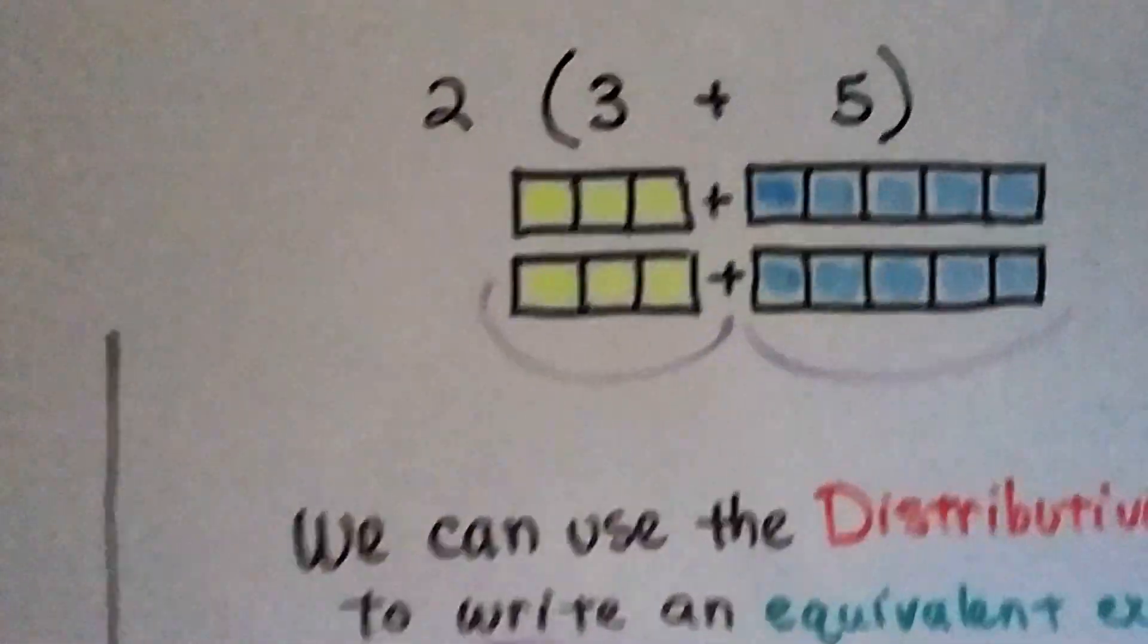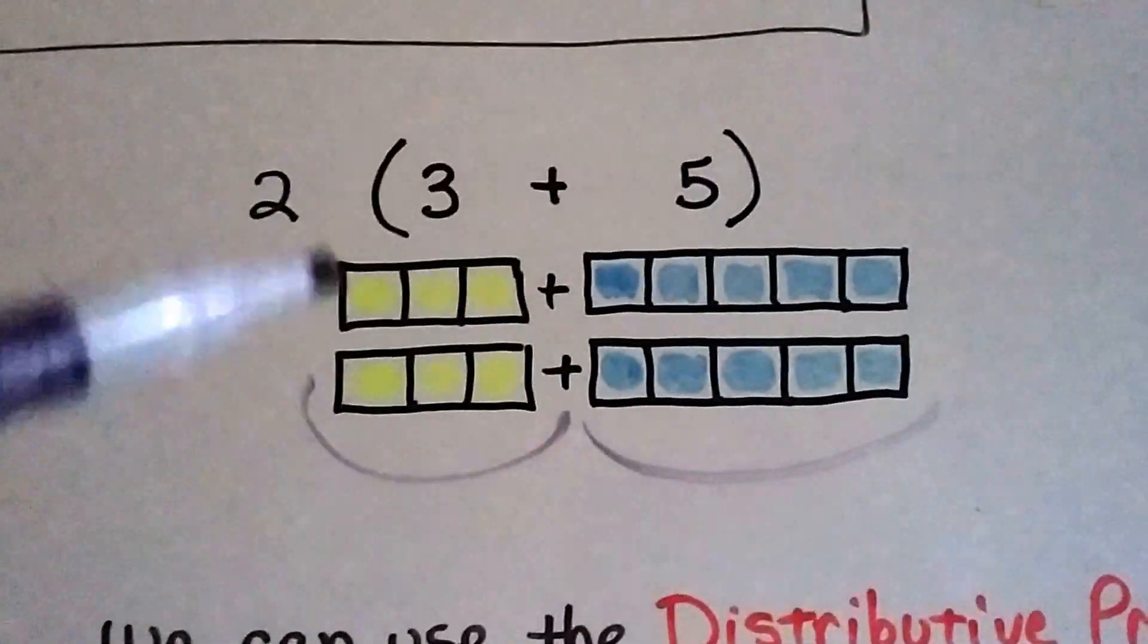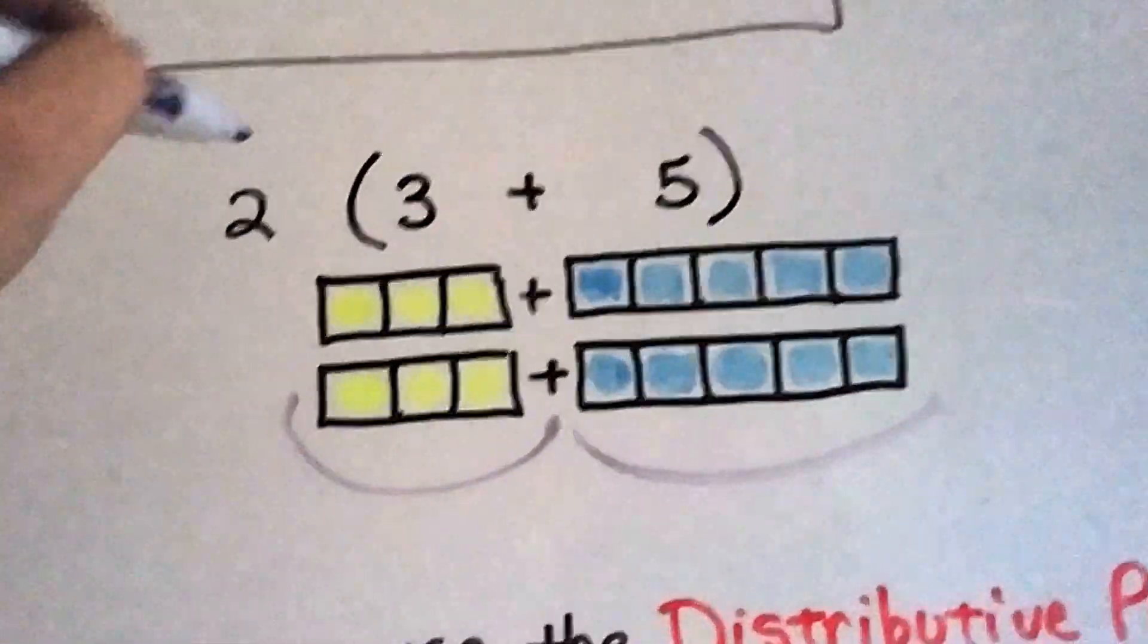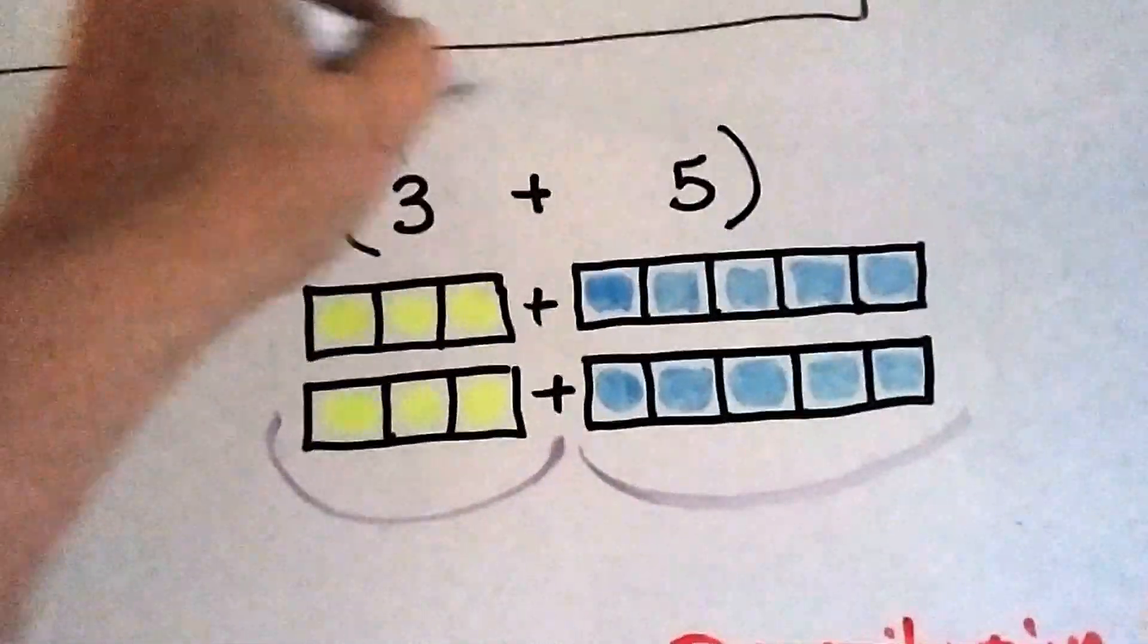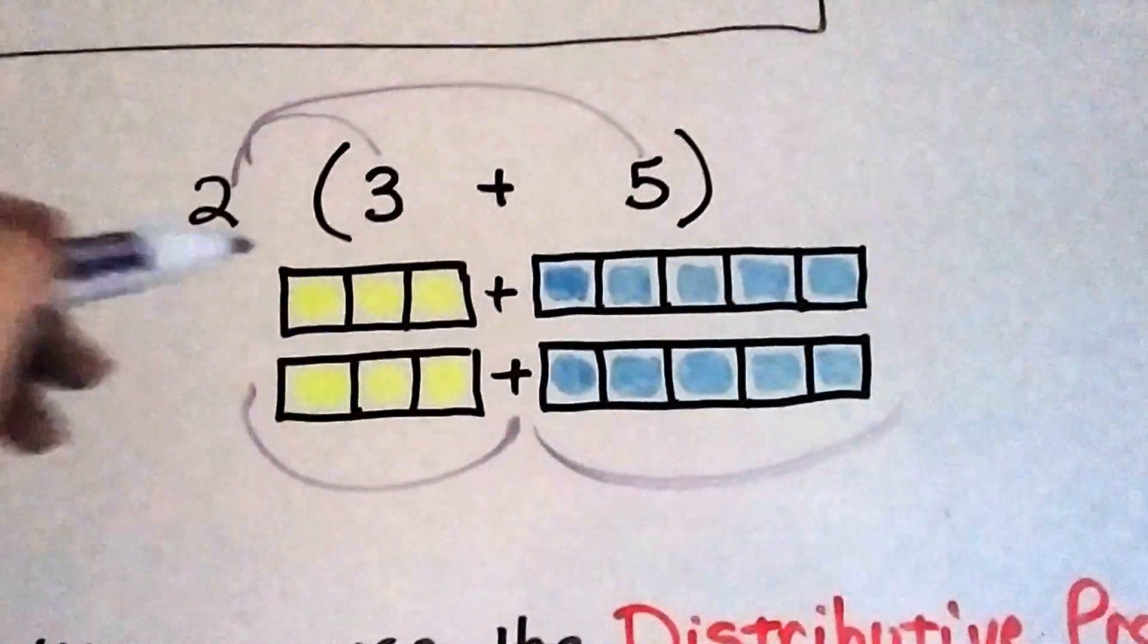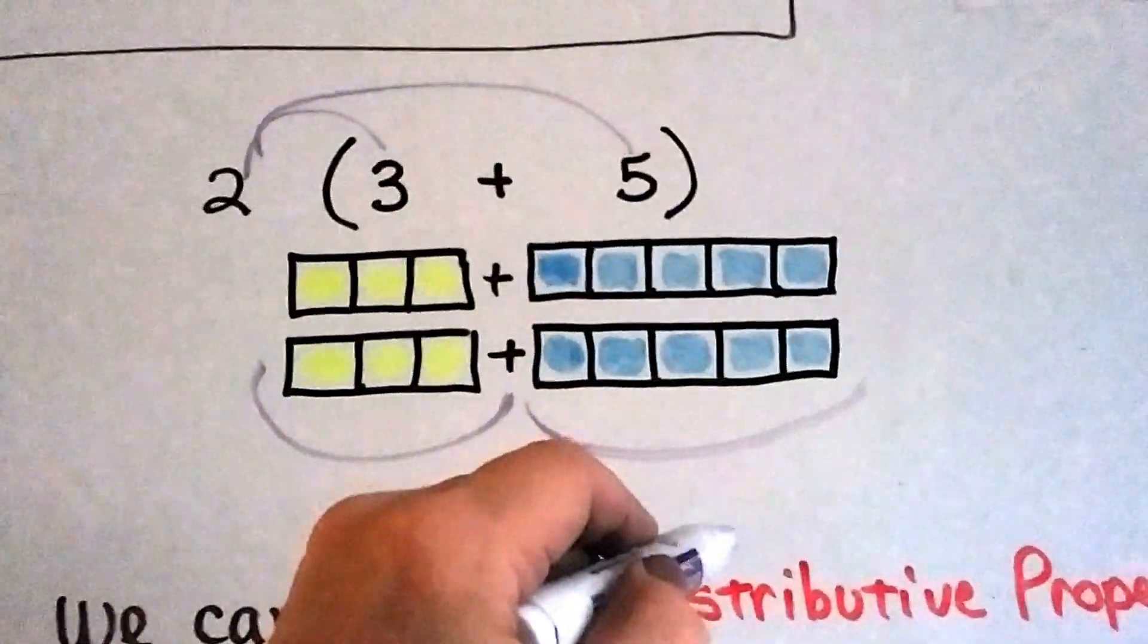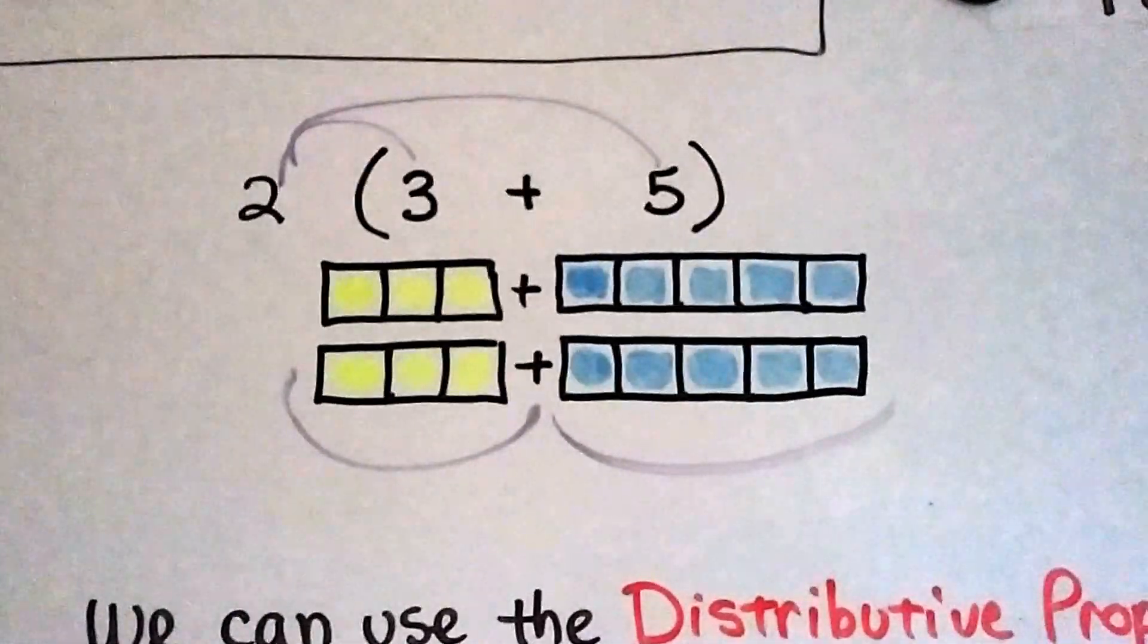So look at it this way. If I had (3+5) in parentheses with 2 on the outside, it's like this. It's like I've got 2 times 3 plus 2 times 5. See? Here's the 2 times 3 plus the 2 times 5. It's going to equal 16.